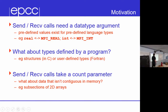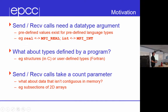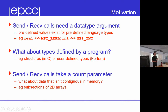Send and receive calls take a count parameter. What about data that isn't contiguous in memory — meaning gaps in data that's not consecutive? Subsections of 2D arrays — if you have a 2D array and take a subsection of it, that in general is not a consecutive block of memory. You might want to send a block or a cube of a larger cube. You'd have to do multiple sends or do a copy, but there are ways of sending these things as a one-off.